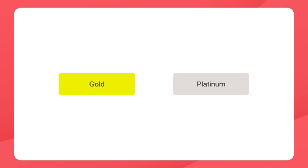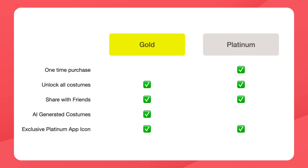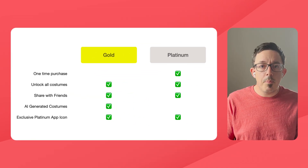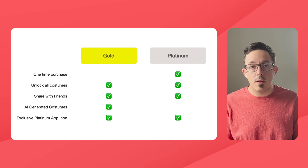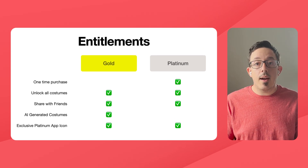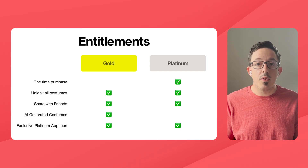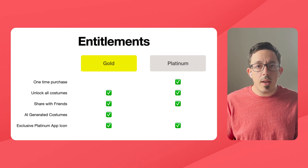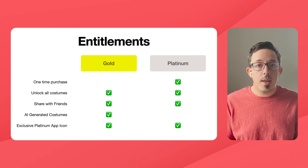Because platinum is a single purchase without recurring revenue, it may have a different set of features it unlocks versus gold. Gold and platinum are what we at RevenueCat call entitlements. An entitlement represents a level of access, features, or content that a user is entitled to. Most apps will have one to a couple entitlements at most — in our case, two: gold and platinum. We haven't talked about in-app purchases yet, because entitlements just represent the features or content that a purchase can unlock.